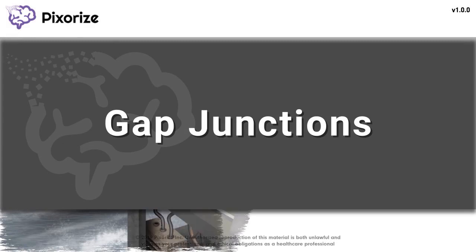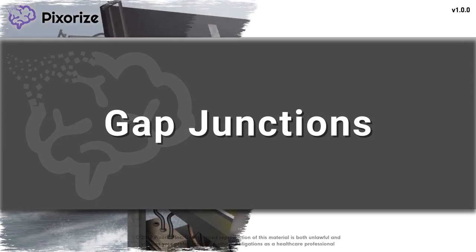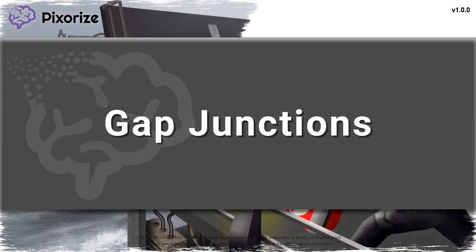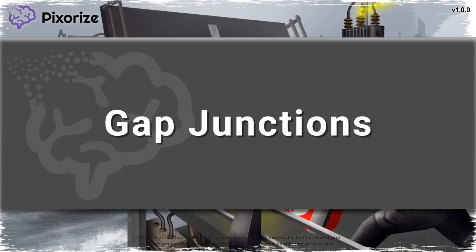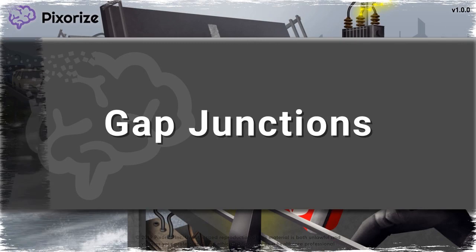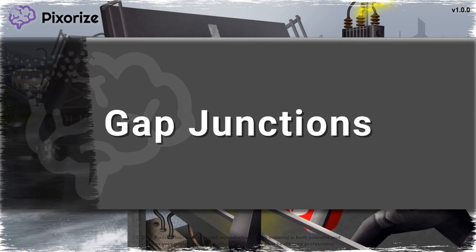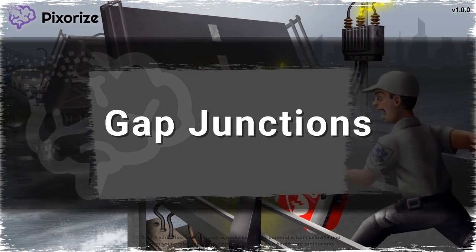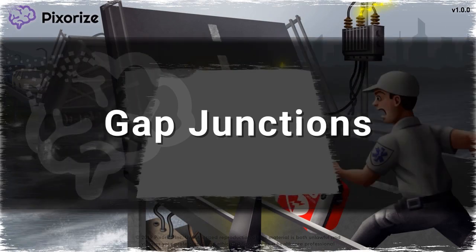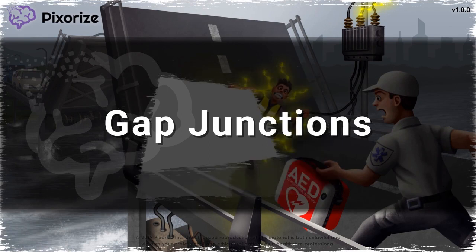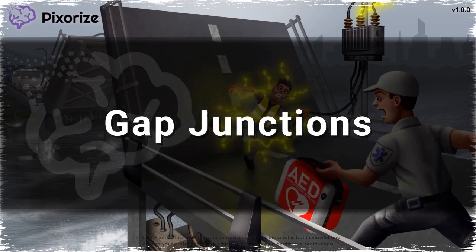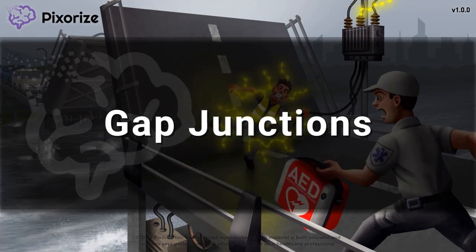Gap junctions are cytoskeleton components that form pores or channels and connect the cytoplasm of adjacent cells. This connection allows for the transport of water and ions between cells. The rapid flow of ions and charge is important for tissues like the heart and neurons, where gap junctions are found in high numbers.